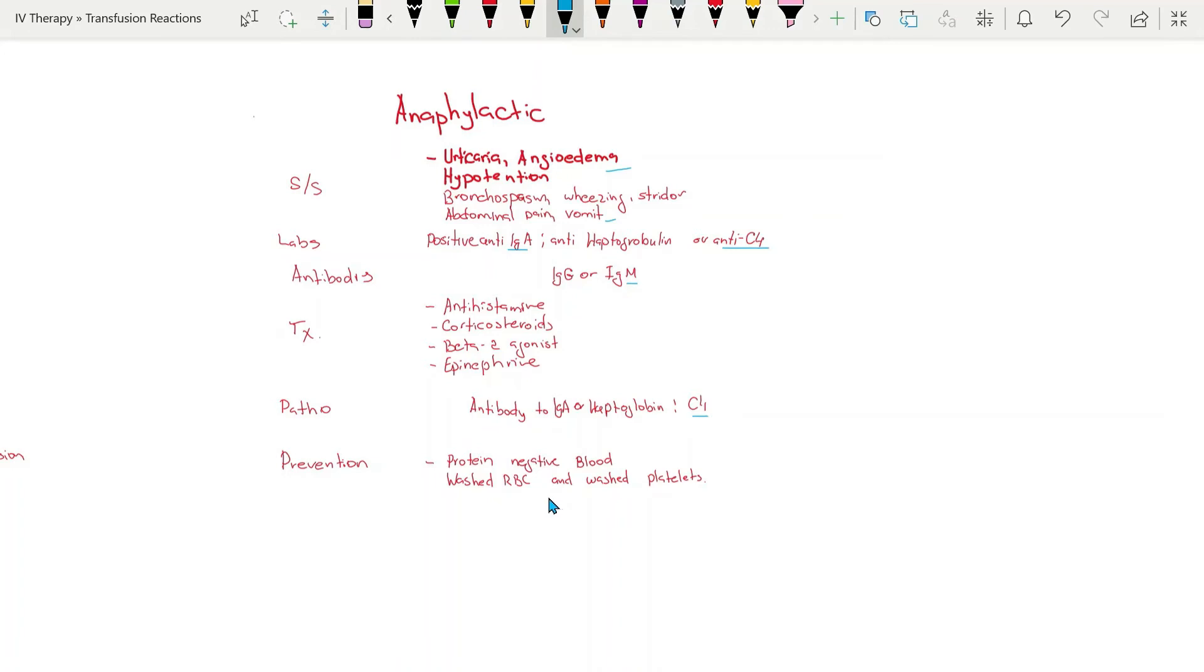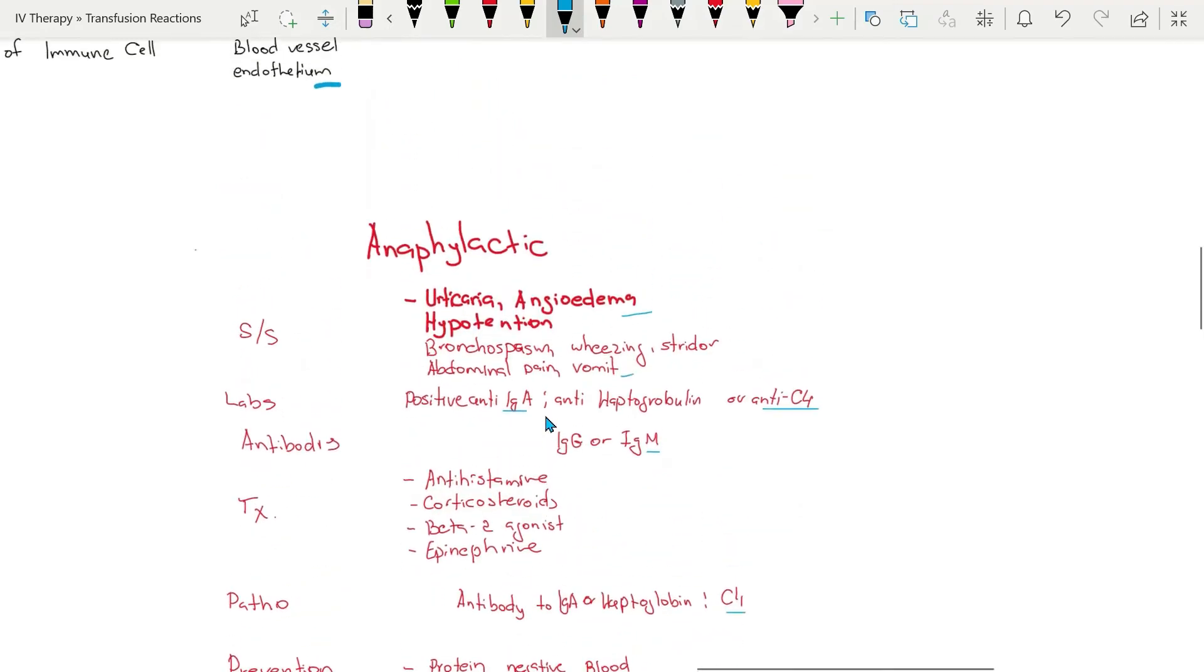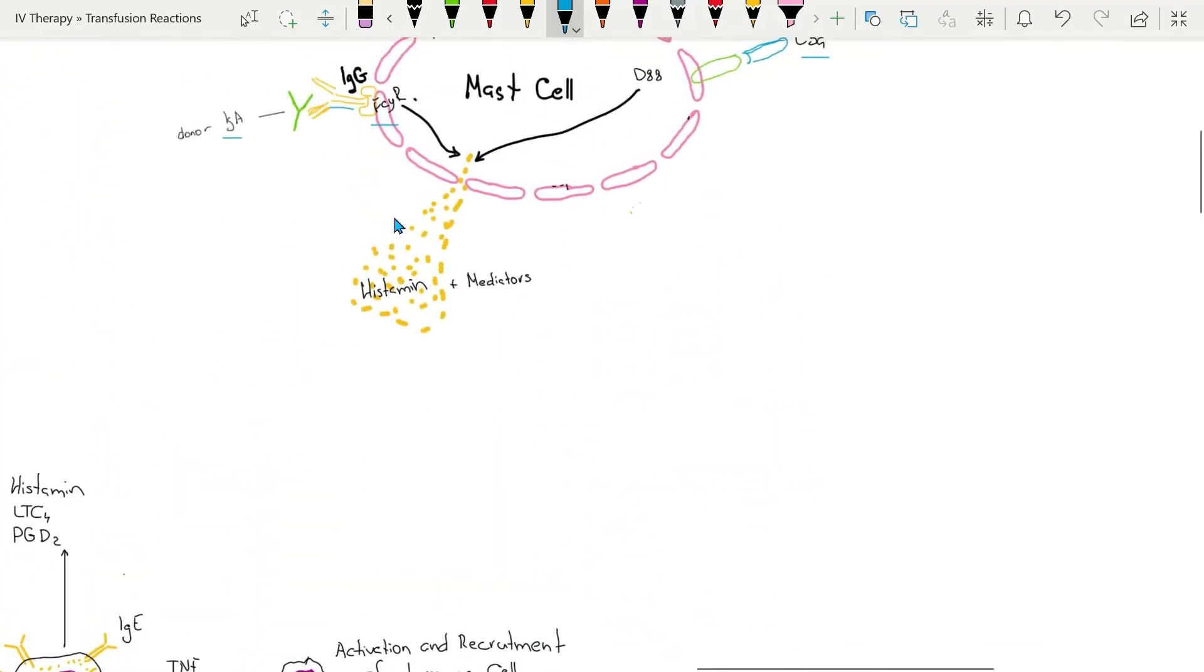Prevention would be washed red blood cells and washed platelets, and blood negative for immunoglobulin A, haptoglobulin, and anti-C4.